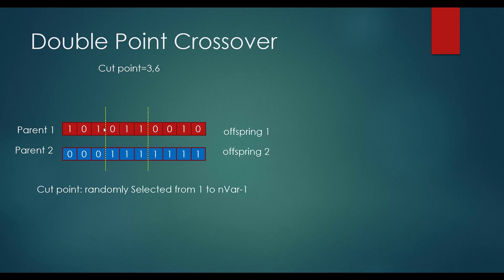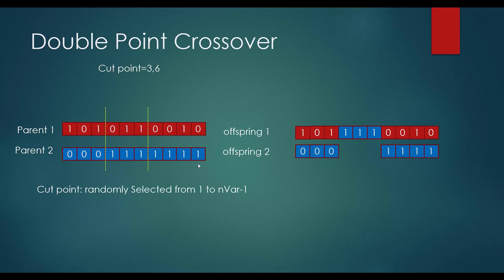We have two cut points and we generate two offspring with respect to them. For offspring one, the first part and the third part are taken from parent one, and the middle part is taken from parent two. For offspring two, the first and third parts come from parent two and the middle part comes from parent one. This is the double point crossover.